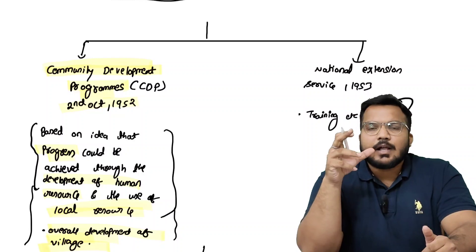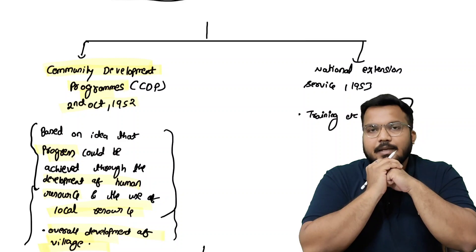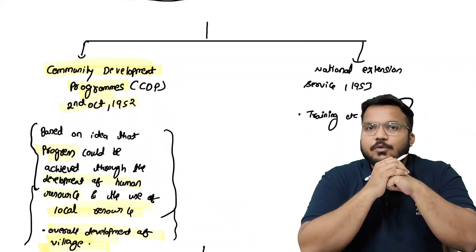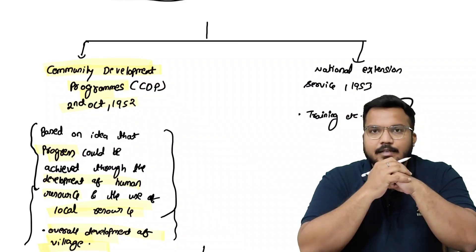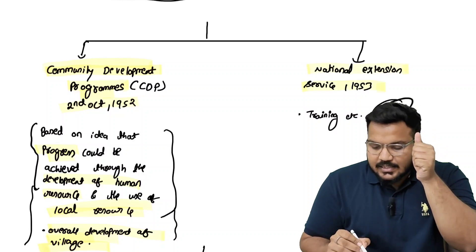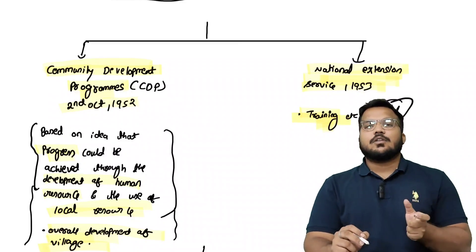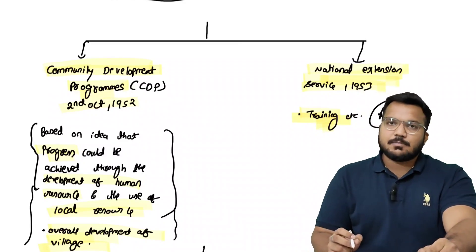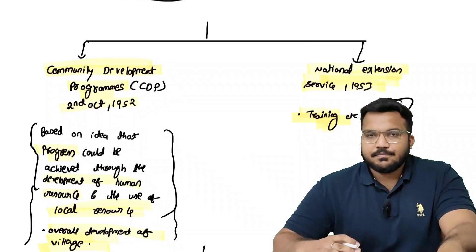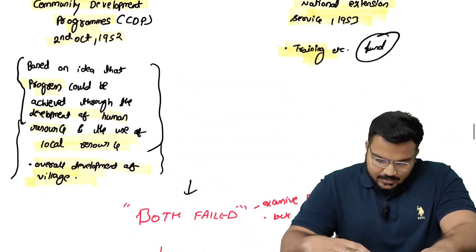Community Development Programme में एक issue था — economic funds की कमी। इतने बड़े देश में पहली बार कोई pan-India scheme लाई गई थी। इसको fund दिया गया National Extension Services (NES) के ज़रिए — 1953 में। इसमें training for the local people of the village भी बहुत important था। लेकिन दोनों — CDP और NES — fail कर जाते हैं।